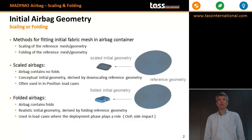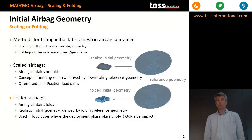A folded airbag is the example given in the two lowest pictures. Again, you have the reference mesh, but now you're going to fold it. Scaling is typically used for out-of-position load cases. It's pretty simple to make if you compare it to folding, although there are a few things you have to take into account for scaled airbags as well.